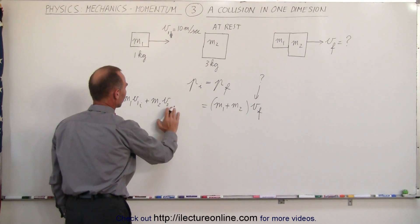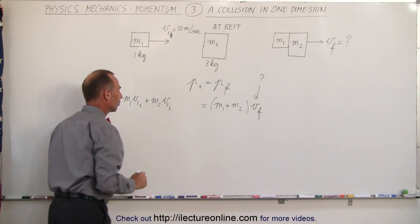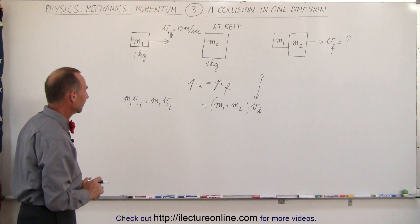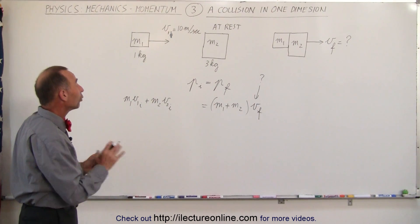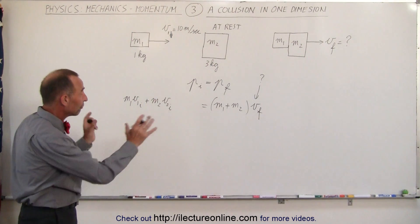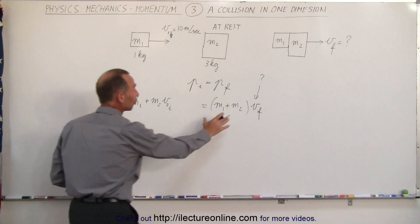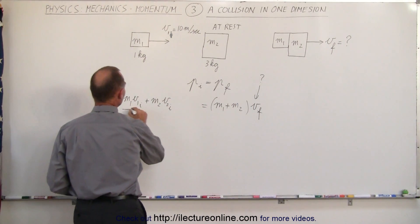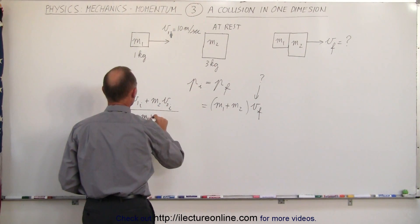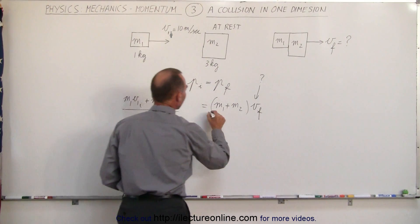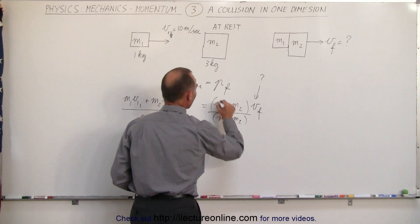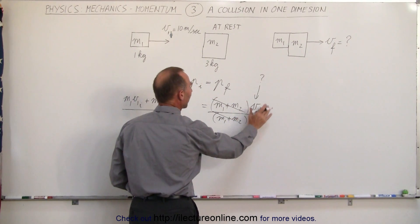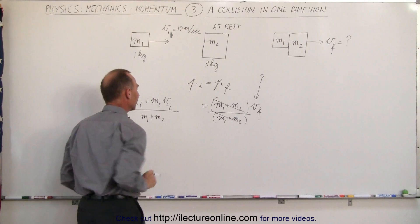And here again, I should use an I instead of a subscript zero, because that makes it cleaner. All right. Let's now plug in all the values, or actually, it might be easier to divide both sides of the equation by the total mass of the system. So we divide the left side by M1 plus M2, we divide the right side by M1 plus M2, which means this cancels out, and now we have V final equals all of this.